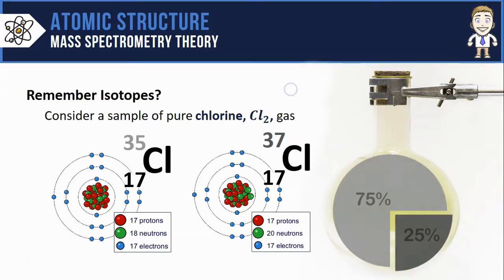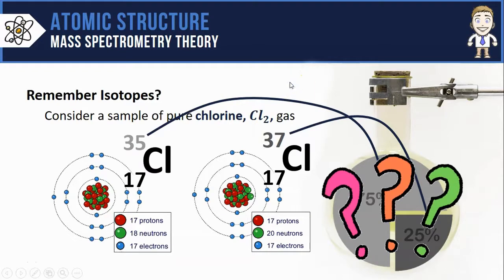What we didn't say in that video is that you can also find out the exact percentages that each of these isotopes makes up in the sample. For example, chlorine-35 makes up 75% of those chlorine atoms, whereas chlorine-37 makes up the other 25%. In this video, we're going to find out how you might determine these percentages in real life.